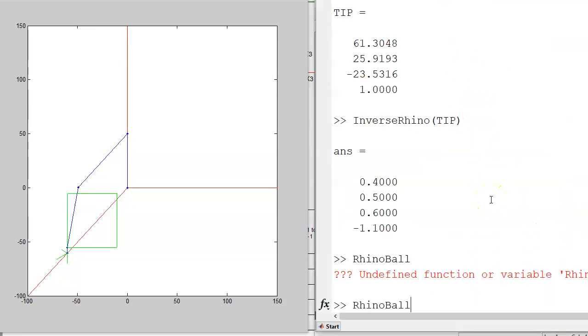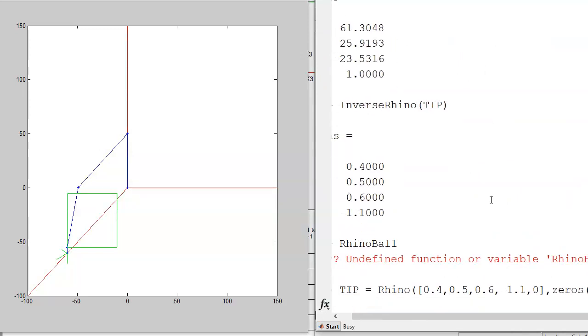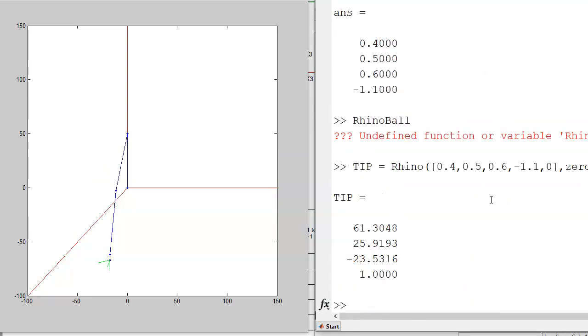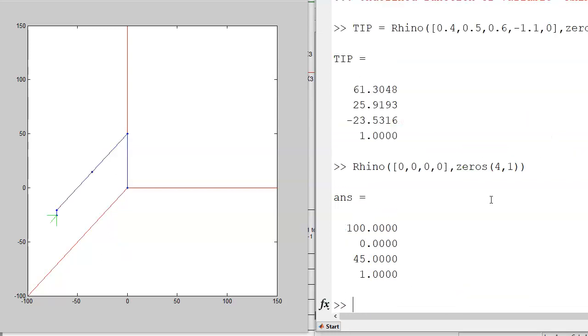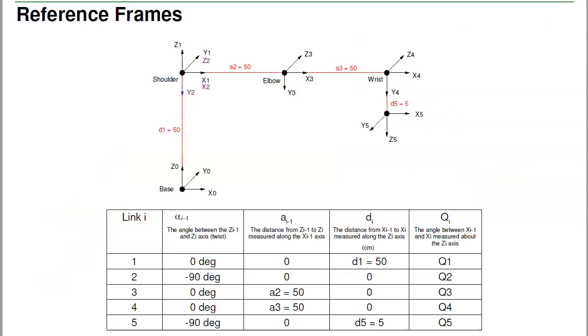If I now tell the robot, go to a certain spot like 0.4 radians, 0.5, 0.6, minus 1.1, I get a spot. Or if I put it in the 0 position, that's the 0 position for Rhino robot. So that's all stuff we've done before.